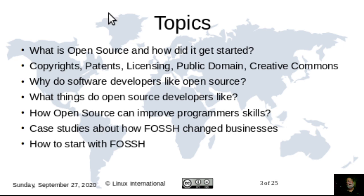The topics we're going to cover today, which have been approved by your management and you, are: what is open source and how did it get started? What are copyrights, patents, licensing, public domain, and creative commons, and how do they affect software? Why do software developers like open source? What things do open source developers like? How open source can improve programmer skills? Some case studies about how free and open source software changed businesses, and how to start with free and open source software and hardware, which we call FOSS-H.